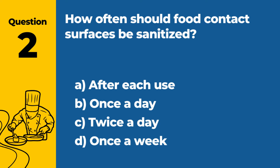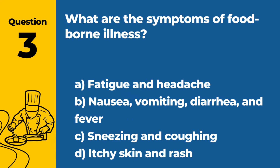Question 2. How often should food contact surfaces be sanitized? a. After each use. b. Once a day. c. Twice a day. d. Once a week. Answer a. After each use. Food contact surfaces should be sanitized after each use to prevent cross-contamination.